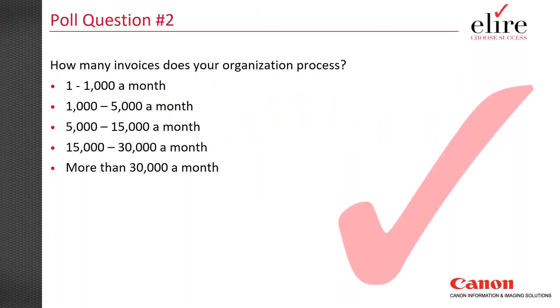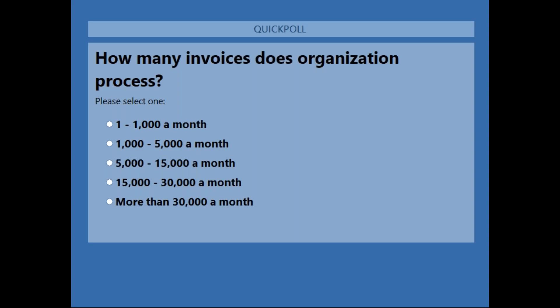Our second poll question: how many invoices does your organization process per month? Options are: 1 to 1,000; 1,000 to 5,000; 5,000 to 15,000; 15,000 to 30,000; or more than 30,000 invoices per month.